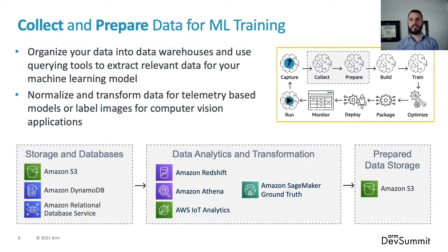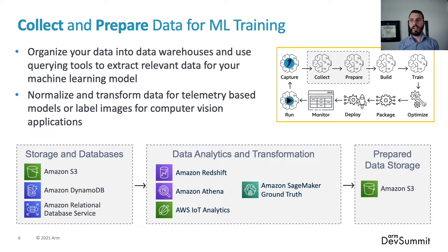Let's dive into the first phase of an MLOps pipeline: collection and preparation of data. As an enterprise, you might already have a collection of data stored in a data warehouse. But in order to train a machine learning model, we need to extract relevant data from that warehouse and transform it into an input that the model algorithm will expect. For telemetry-based data such as sensor data, we can use extract, transform, and load pipelines to normalize data. And for computer vision algorithms, we need to prepare and label images to be consumed by the training algorithm.